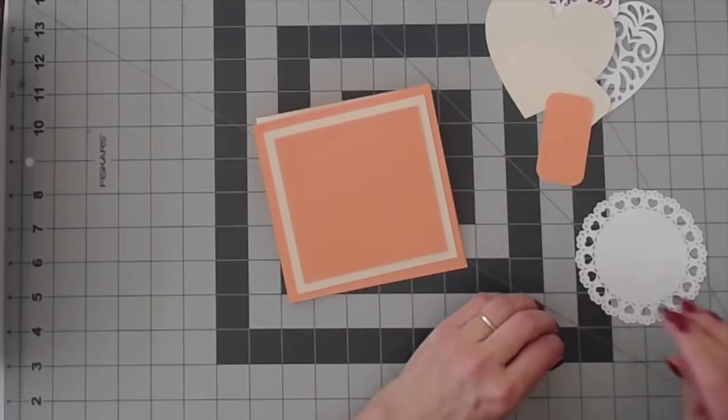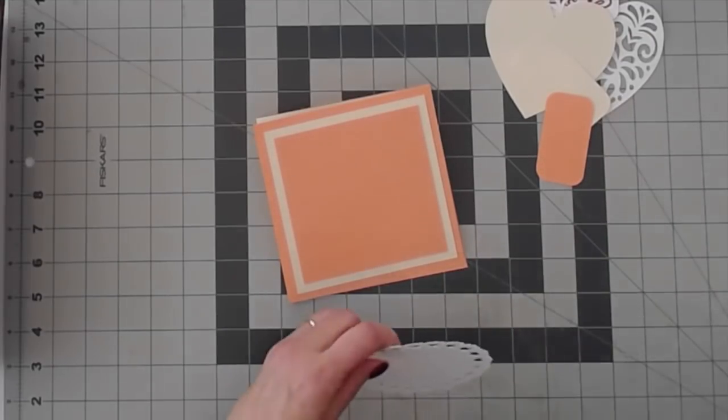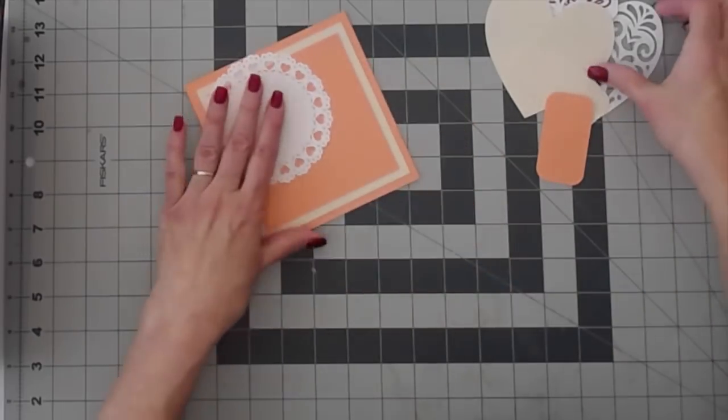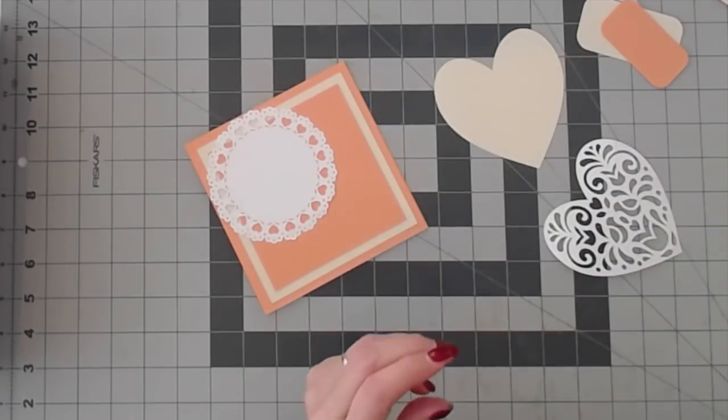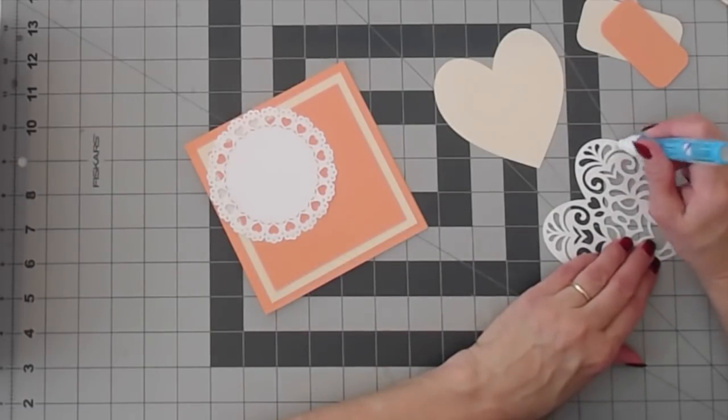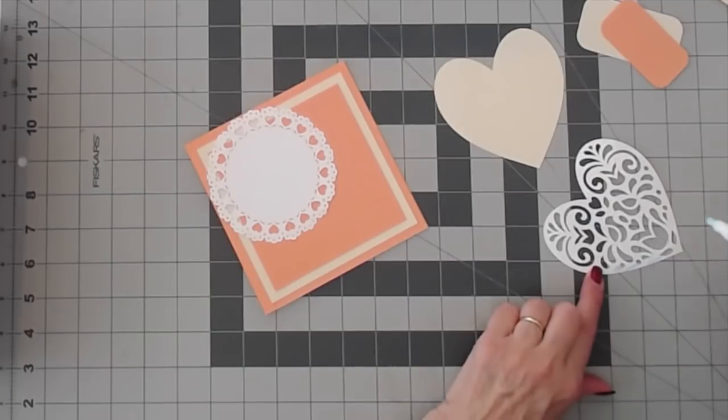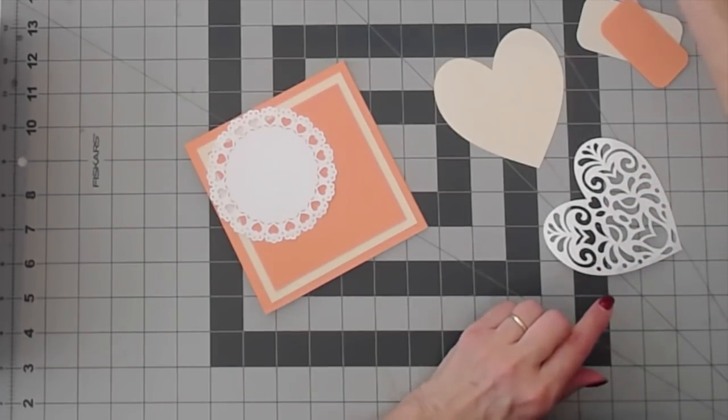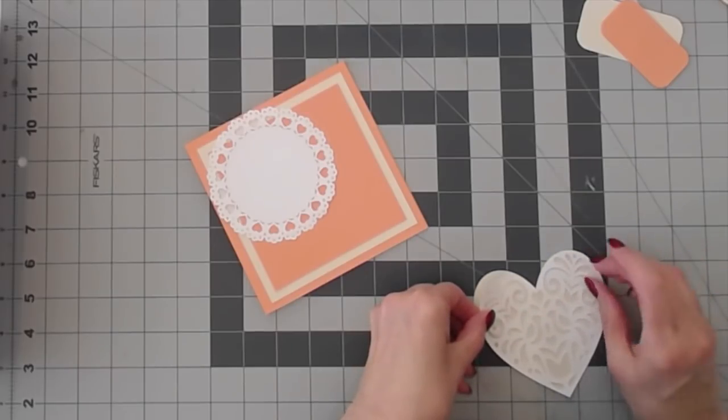The first thing I'll do is attach my doily. Next we're going to prepare this heart. I think I'll use my zig pen for this. We're not going to put the adhesive all over during this video, but normally I would. That should be okay for the sake of making this video. We'll just bind the filigree part on top of it.